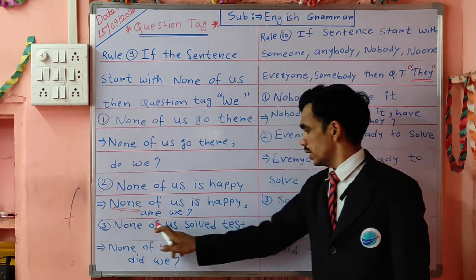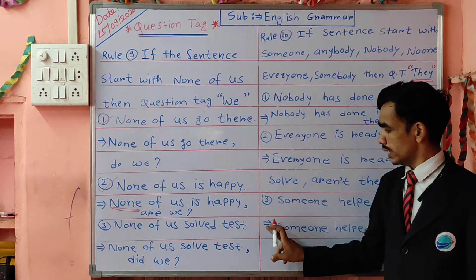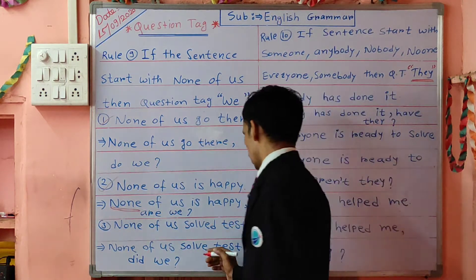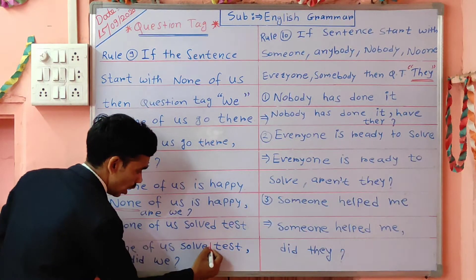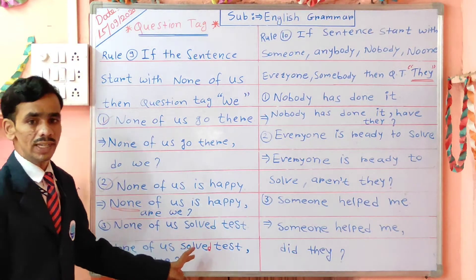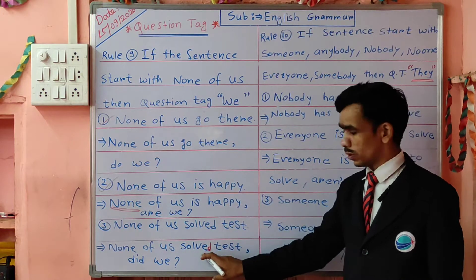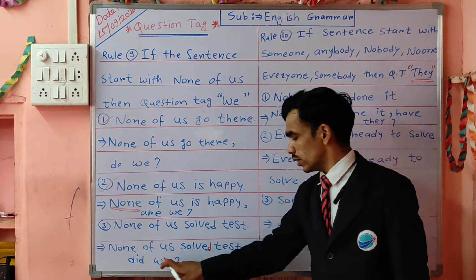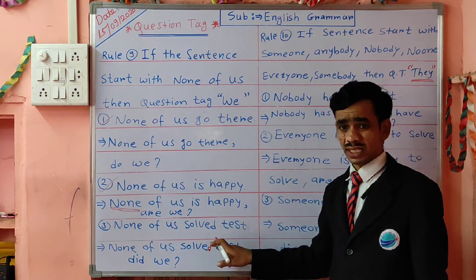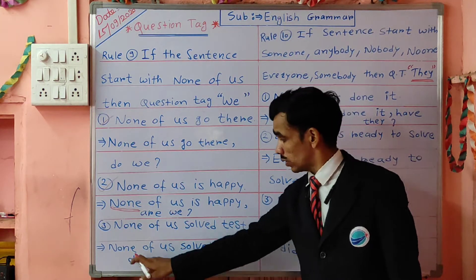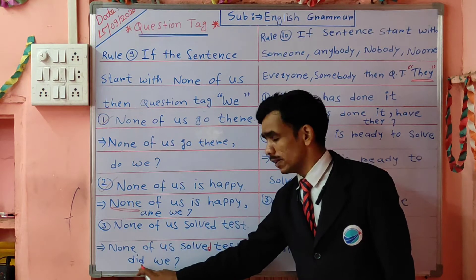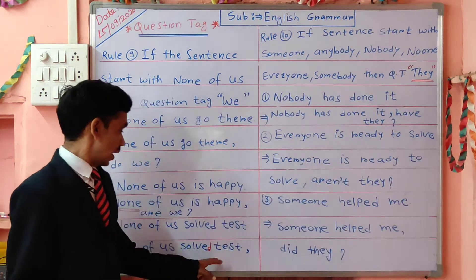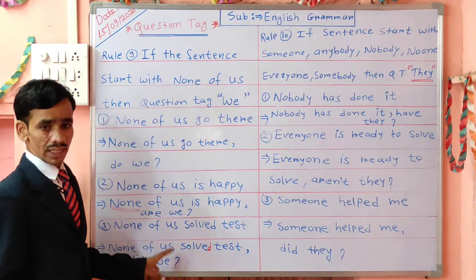Next example: 'None of us salted it.' Here there is a V2 (past tense). So: 'None of us salted it, did we?' We take 'did we' because V2 is there. And we take the positive form because 'none' is there — none has negative meaning, so the question tag is positive. We take 'we' compulsory because of 'none of us.' Do you understand properly?